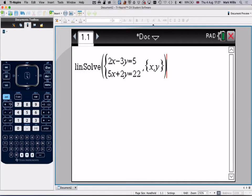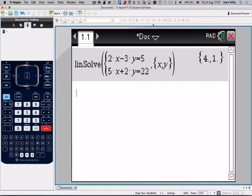Take the cursor to the end, press enter, you're going to get that the first variable, x, is 4, and the second variable, y, is equal to 1.